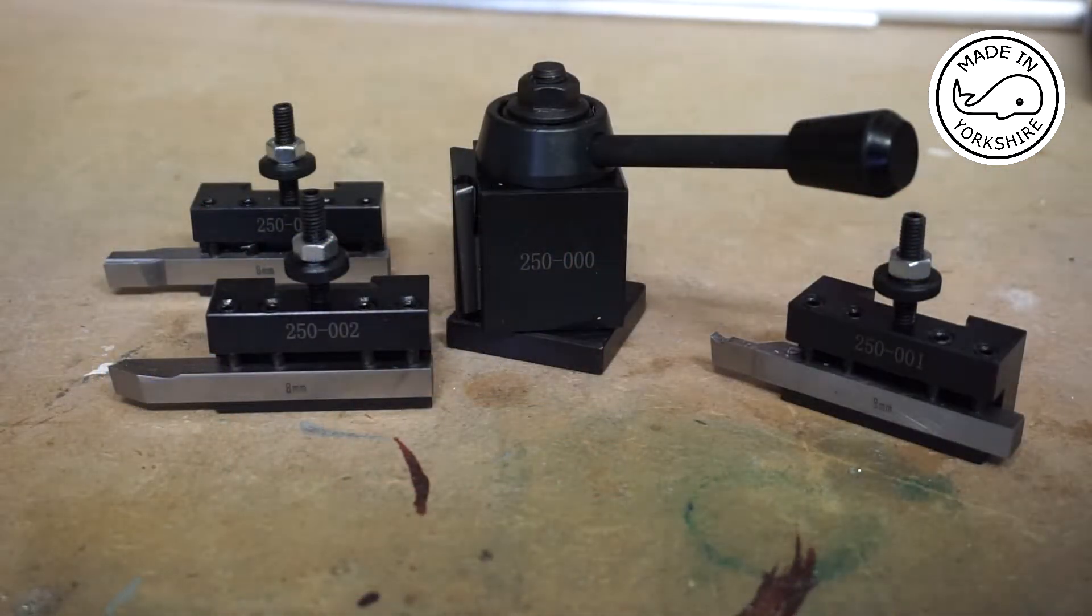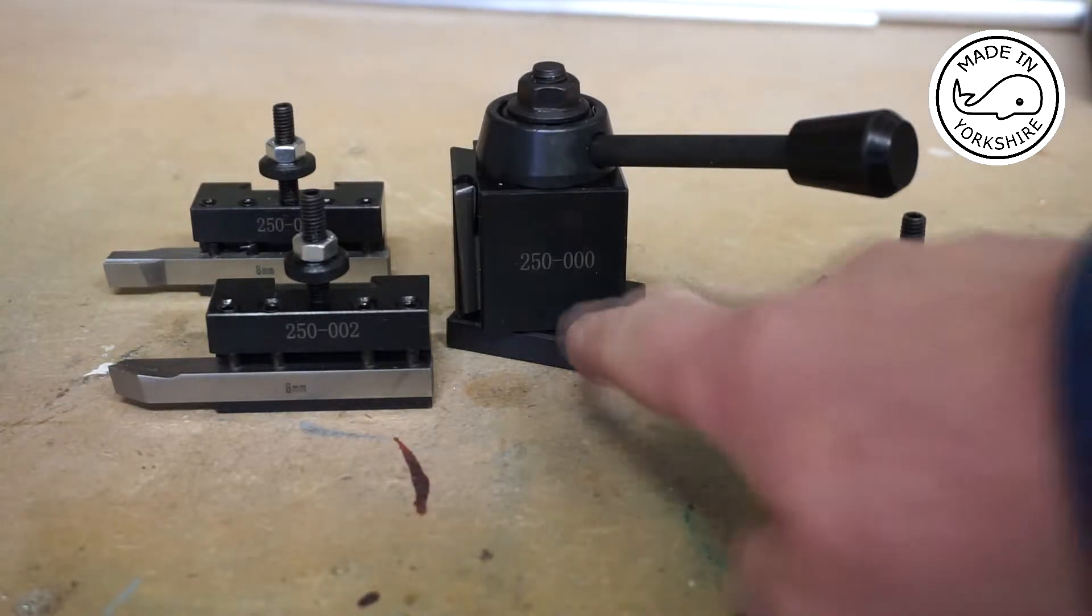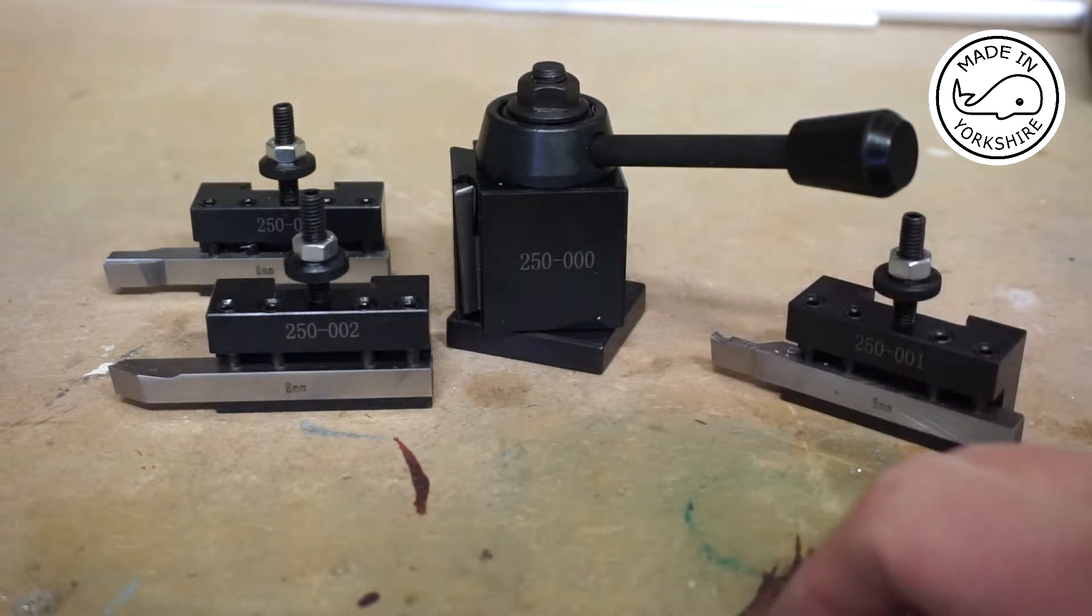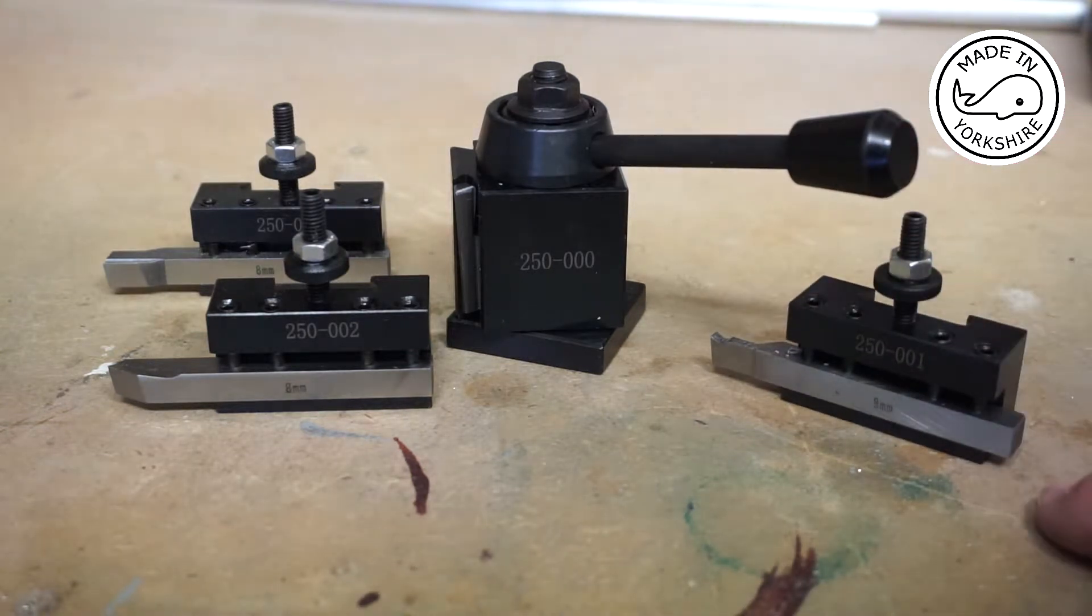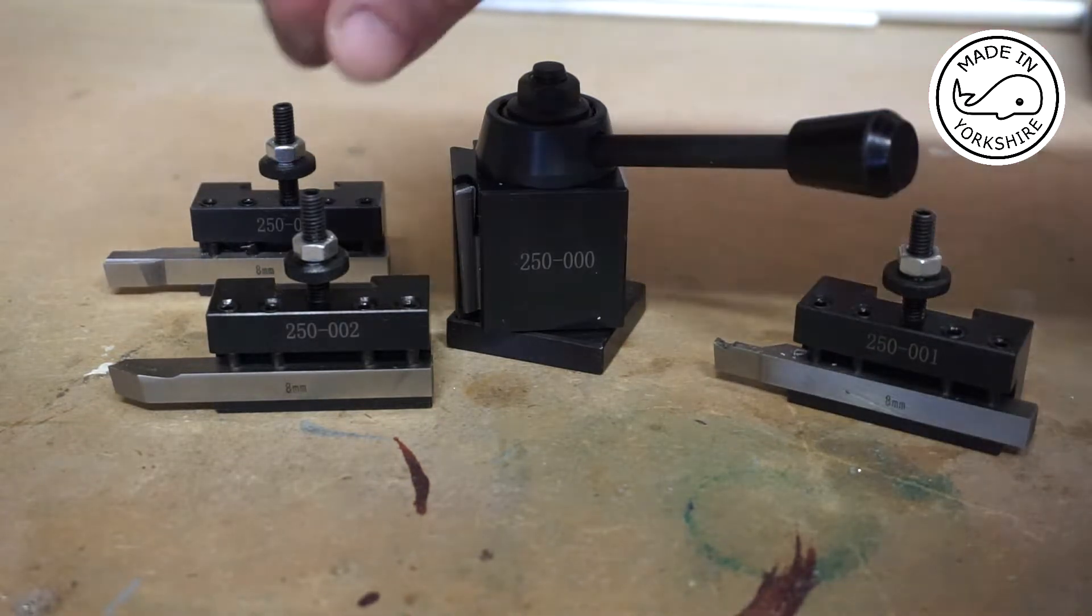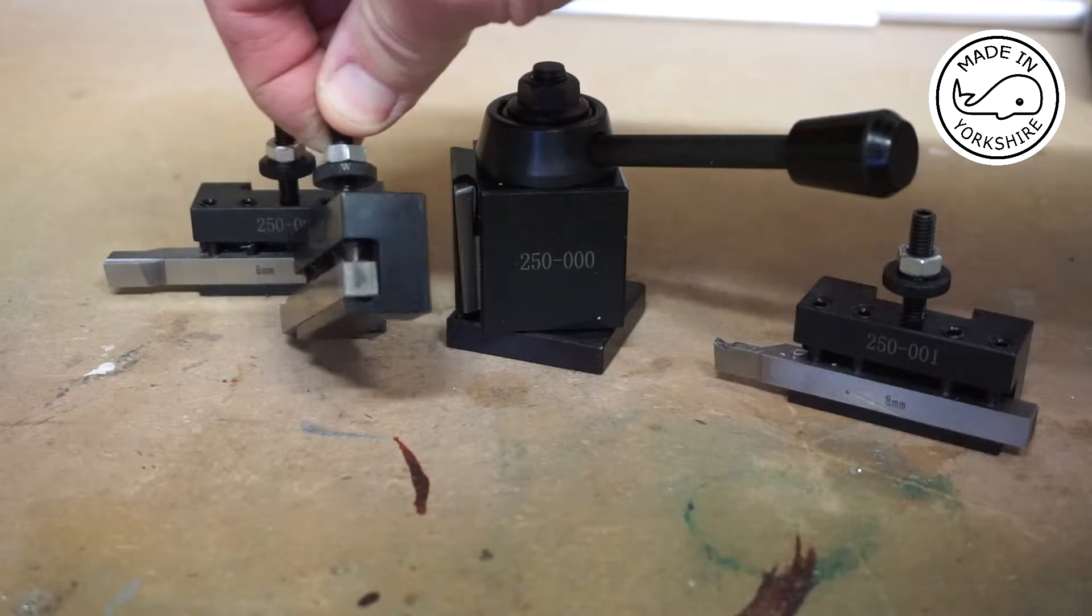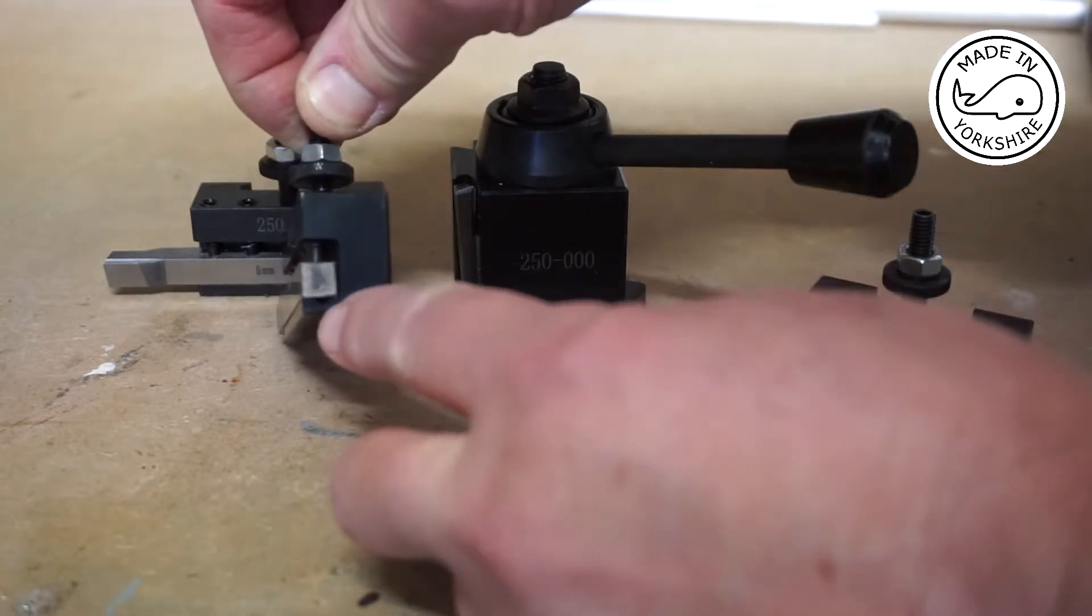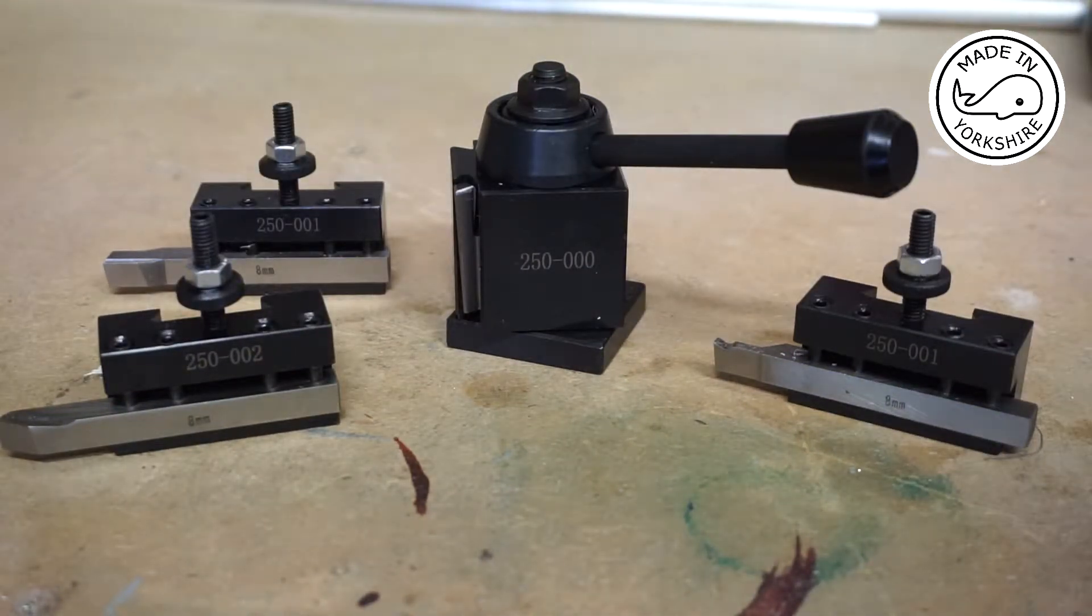So the quick change tool post set that I purchased from Archeoro Trade is the model 000, it's actually labelled here as 250-000 and it comes with three tool holders. Two are the 250-001 which takes the square tools and the other one the 250-002 can take square but it can also take round tools as well. There's a little sort of groove in there. This whole set I think cost around £85.